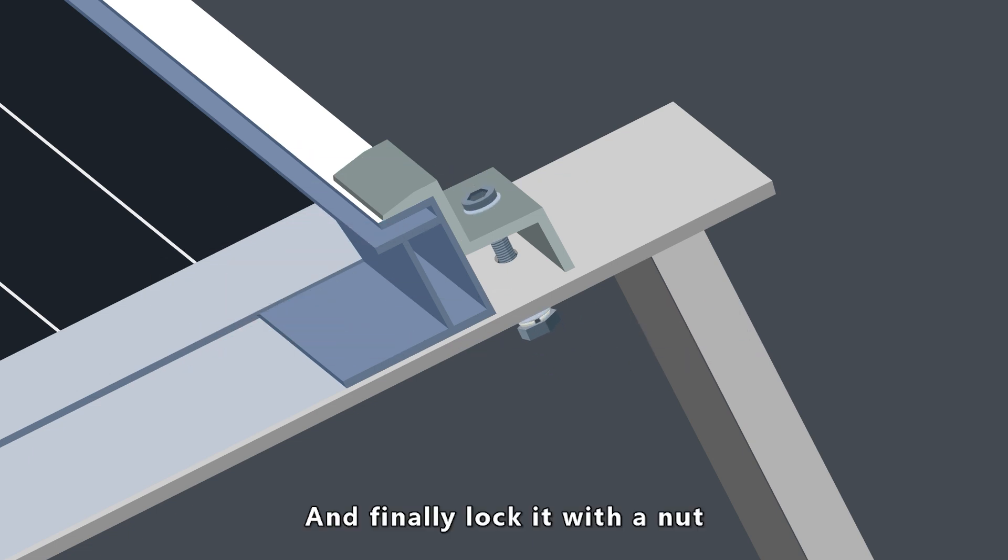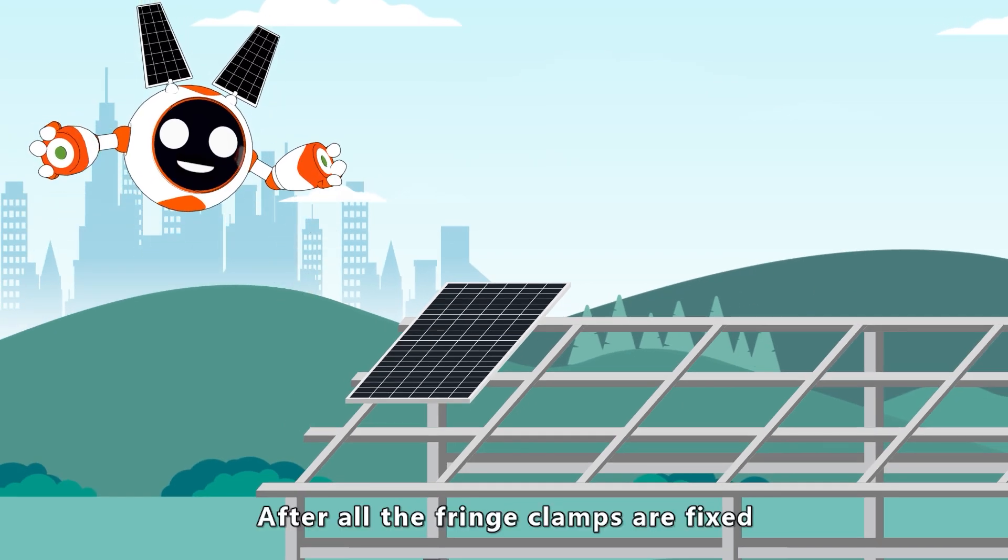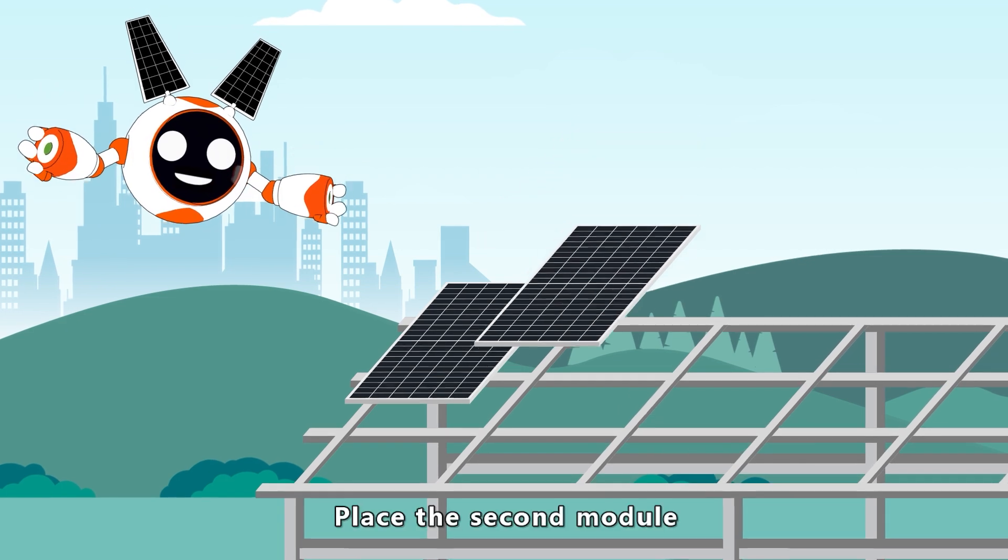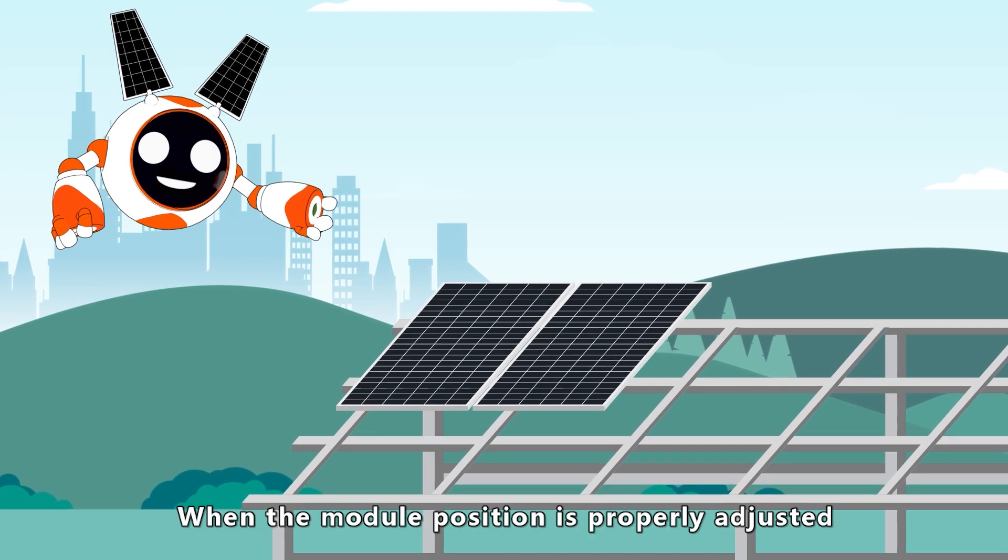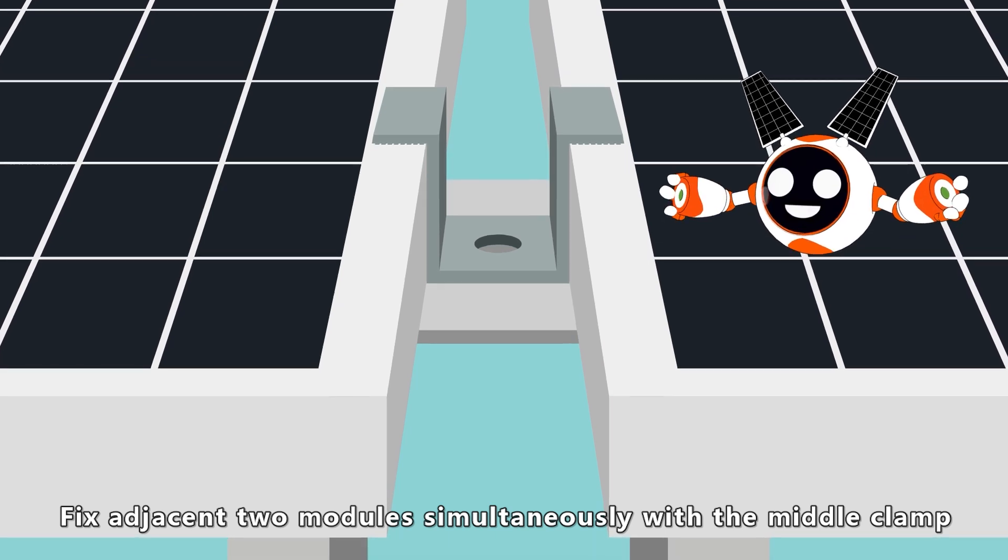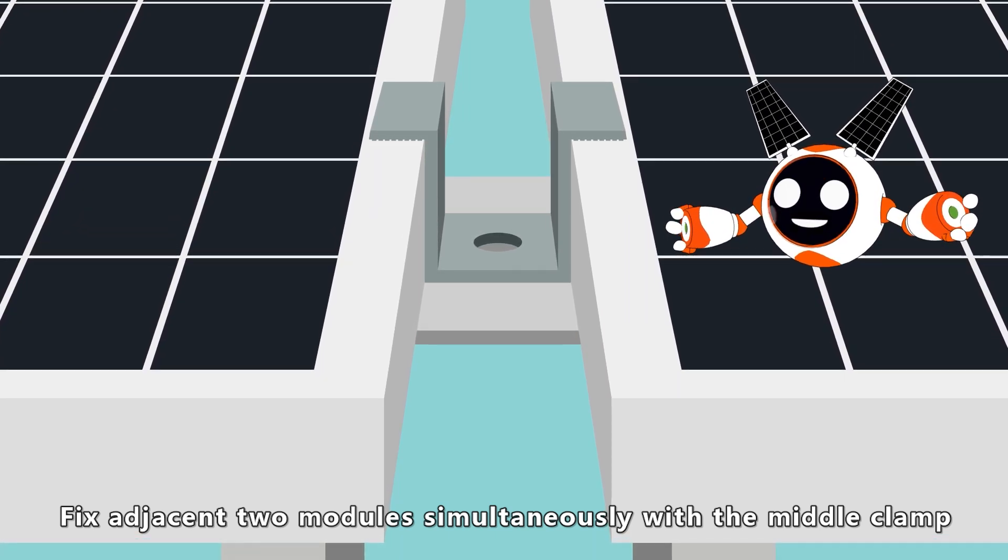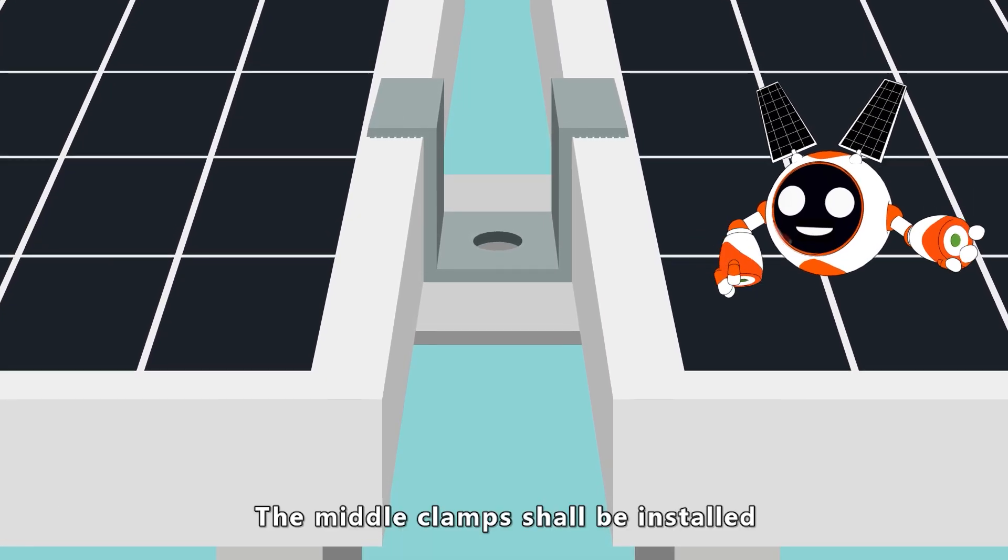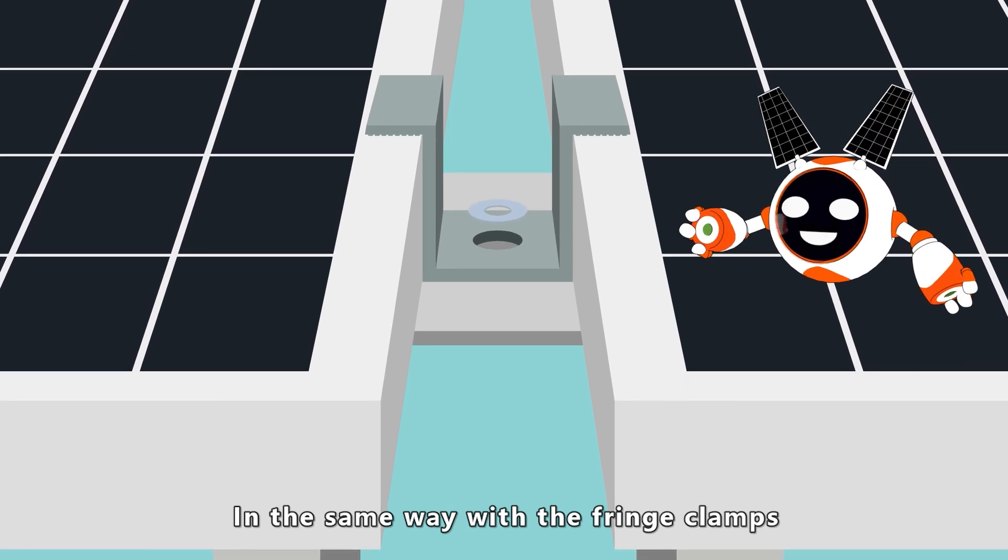And finally, lock it with a nut. After all the fringe clamps are fixed, place the second module. When the module position is properly adjusted, fix adjacent two modules simultaneously with the middle clamp. The middle clamps shall be installed in the same way with the fringe clamps.